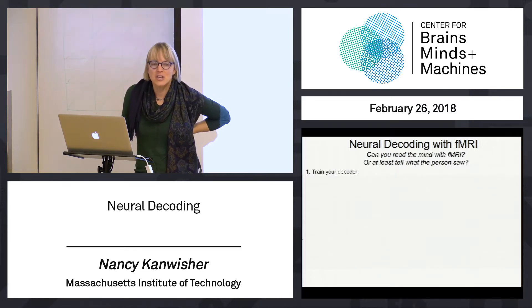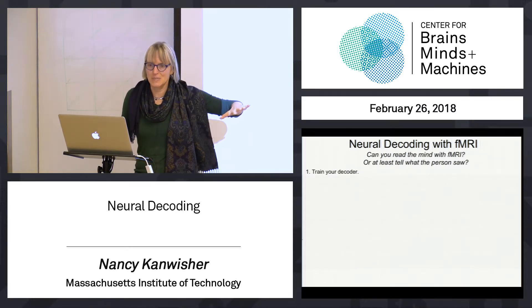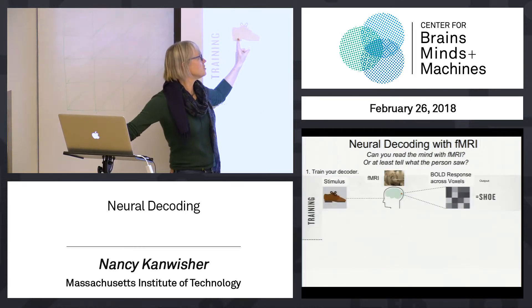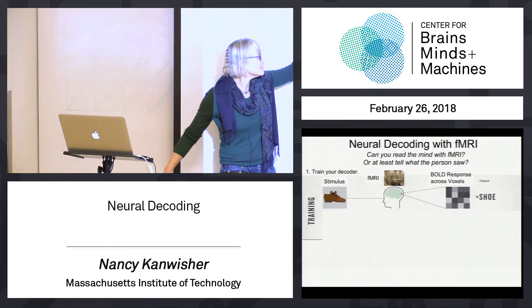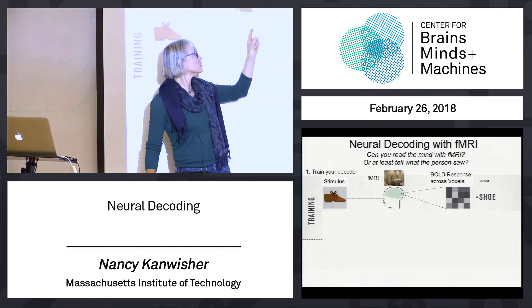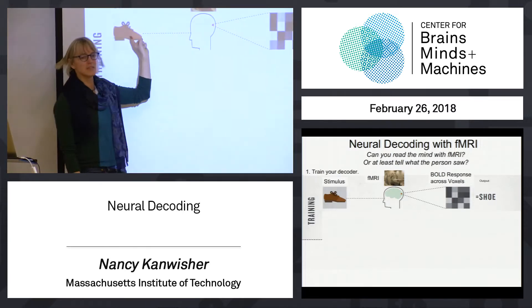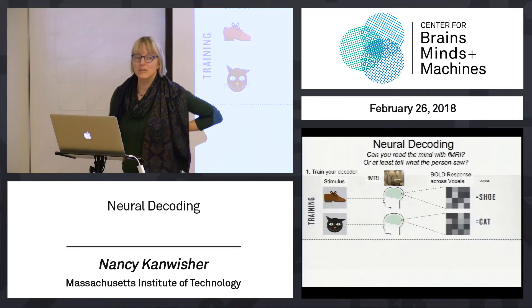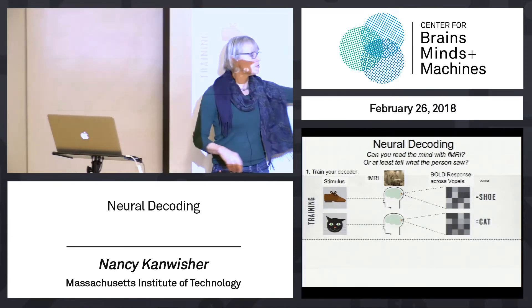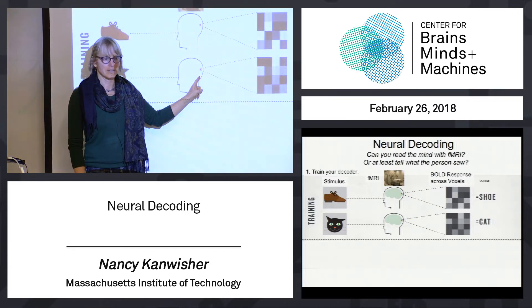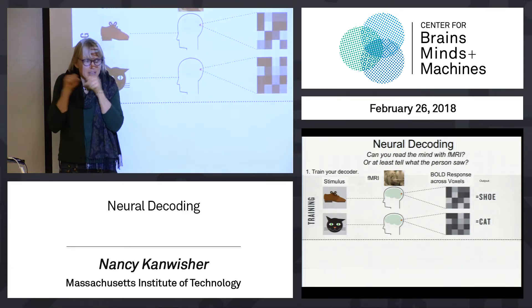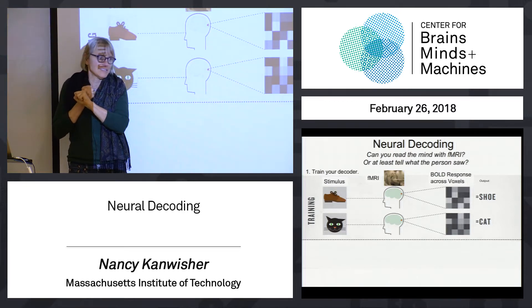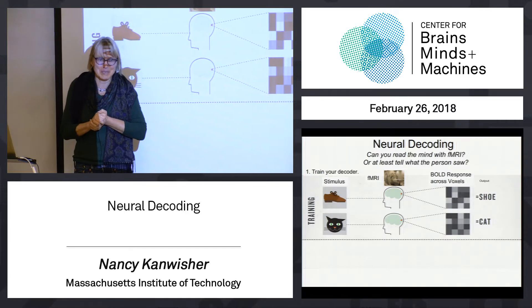What you do is you design a decoder. You collect a bunch of MRI data and design a decoder. You scan the subject while they're looking at shoes and collect functional MRI data. Here's a pattern of response over some region of the brain when the subject is looking at shoes. You scan them while they're looking at cats, and you get some other pattern in the same region of the brain. Now it's like we have brain templates for what happens in the brain when you see shoes, and what happens in that same region when you see cats or anything else.